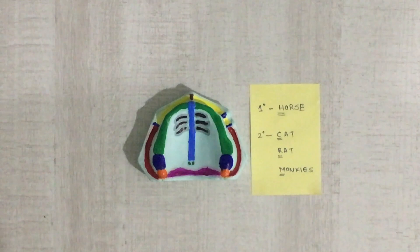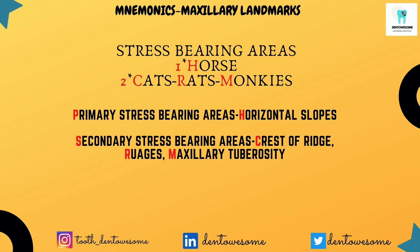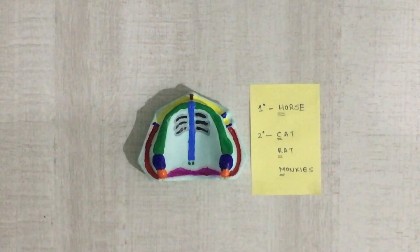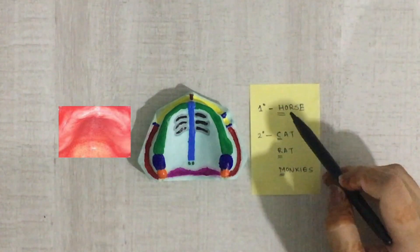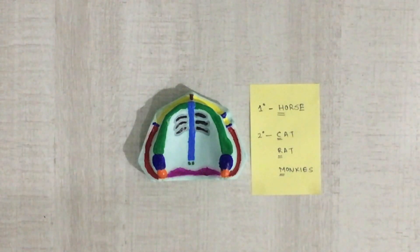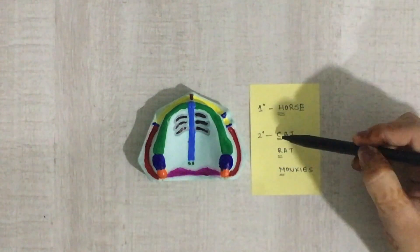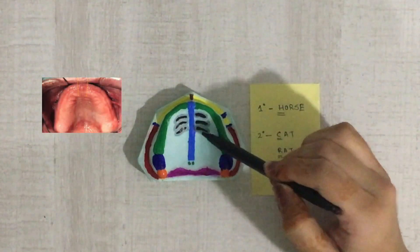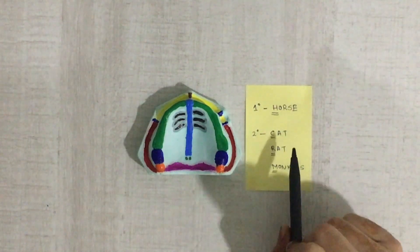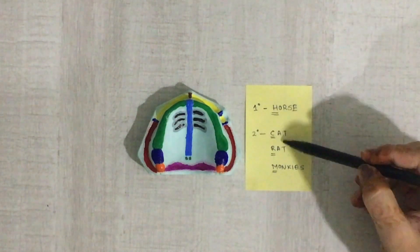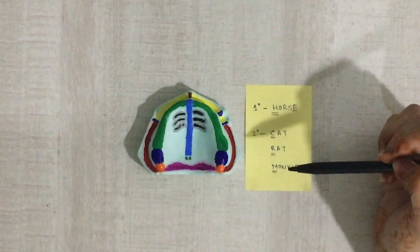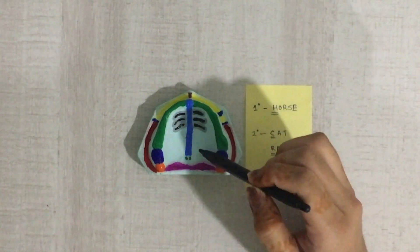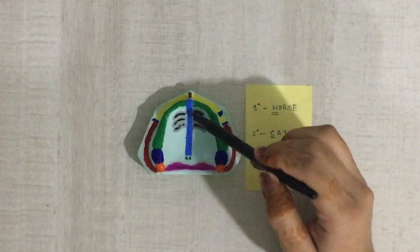Now coming towards the stress bearing areas — these are areas where you can apply stress. They are divided into primary and secondary stress bearing areas. The primary stress bearing area is the horizontal slopes of the hard palate going towards the mid palatine region. The secondary stress bearing areas are: C — crest of the residual alveolar ridge, R — rugae, and M — maxillary tuberosity. These are the same structures as the supporting structures of the maxilla.